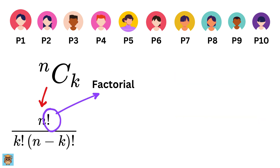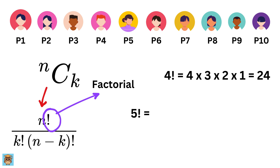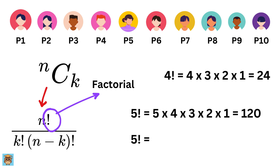When you see the term factorial, it simply means multiplying a number by every positive number smaller than it. For example, 4 factorial — written as 4! — means 4 × 3 × 2 × 1, which equals 24. Similarly, 5 factorial equals 5 × 4 × 3 × 2 × 1, which is 120. We can also write 5 factorial as 5 times 4 factorial. Keep this in mind.